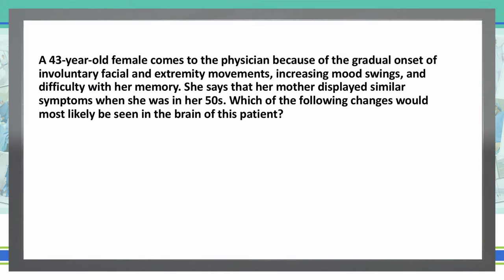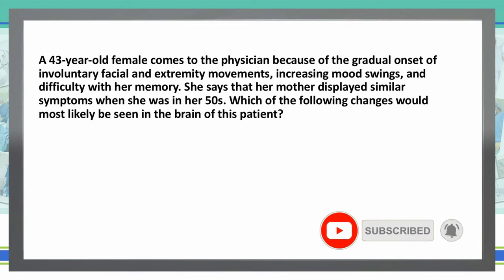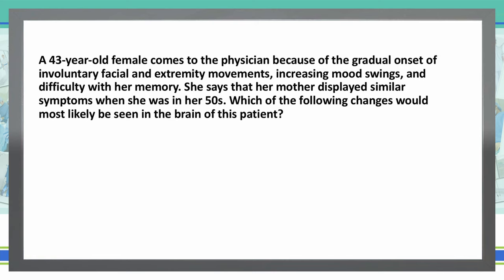As always, we start with the last sentence of the vignette and then read the rest so we know what we're looking for. Which of the following changes would most likely be seen in the brain of this patient? A 43-year-old female comes to the physician because of the gradual onset of involuntary facial and extremity movements, increasing mood swings, and difficulty with her memory. She says that her mother displayed similar symptoms when she was in her 50s.